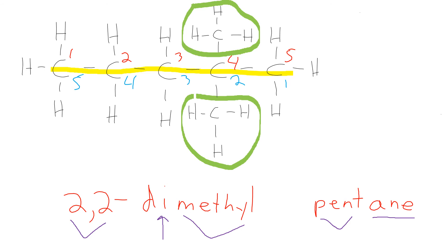An important clarification: in organic compounds, numbers always describe location. They don't describe how many carbons. The number of carbons is described using prefixes — meth, eth, prop, but, pent, hex, hept. Numbers will always be location describers.